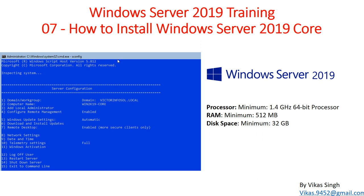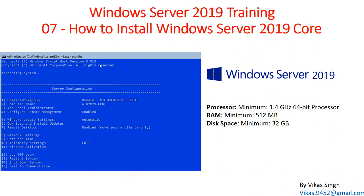To install Windows Server 2019, whether GUI or Core, you require a minimum configuration: a 64-bit processor with a minimum speed of 1.4 GHz, a minimum of 512 MB of RAM, and 32 GB of disk space.